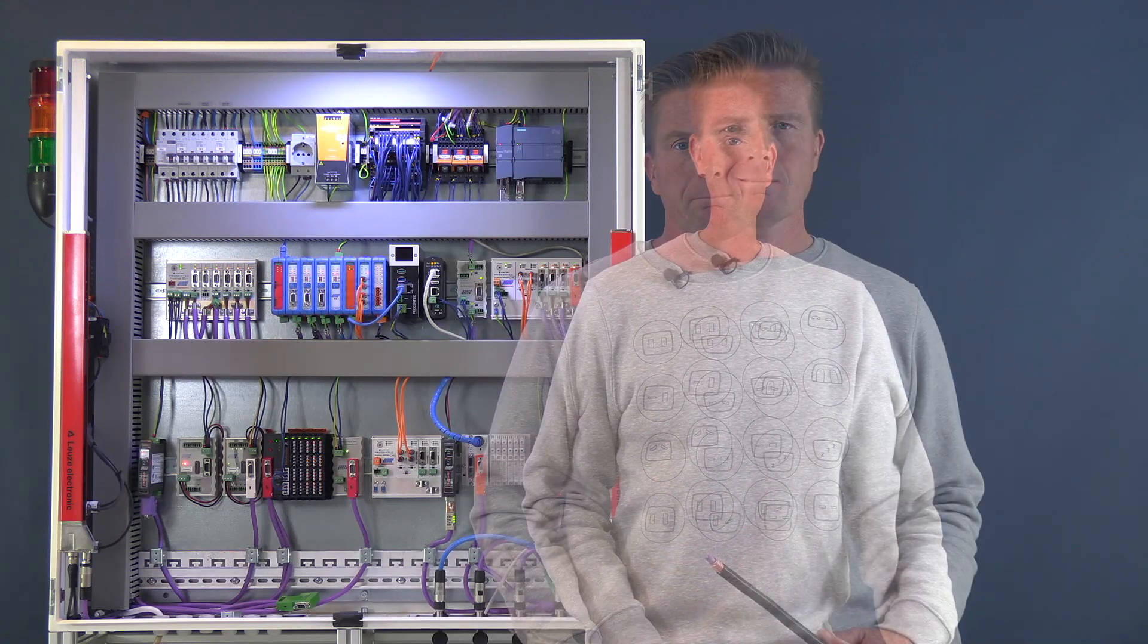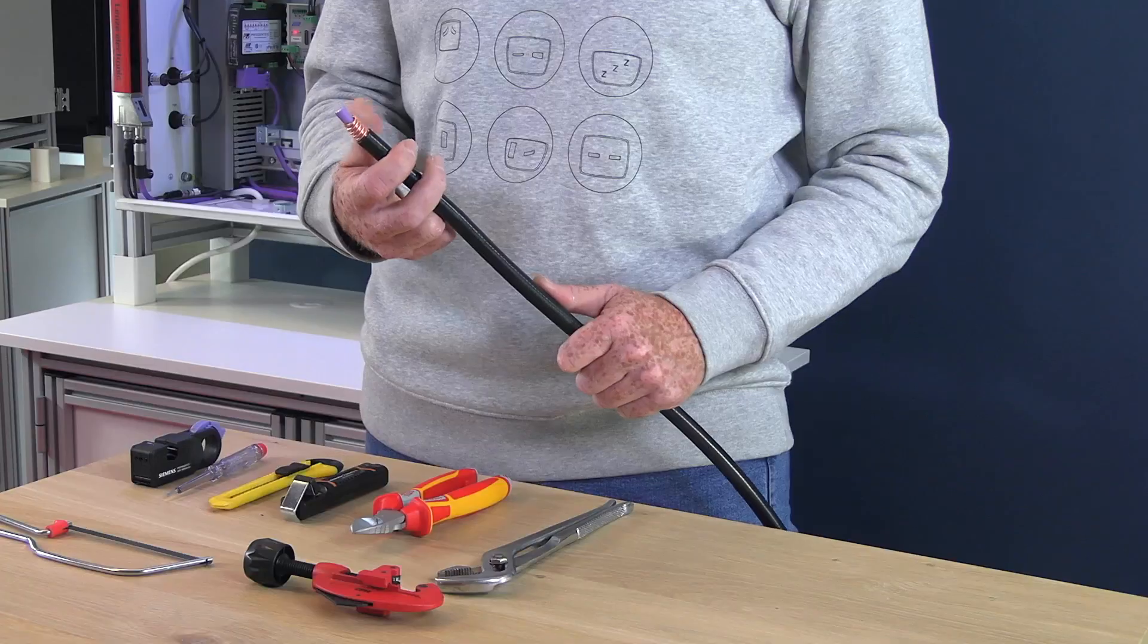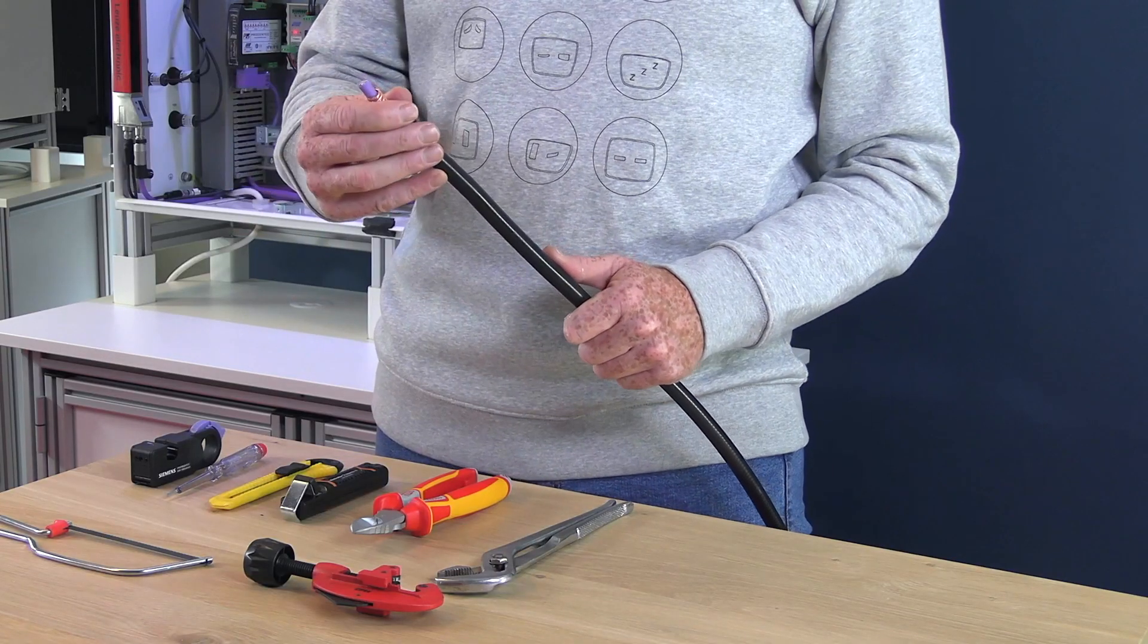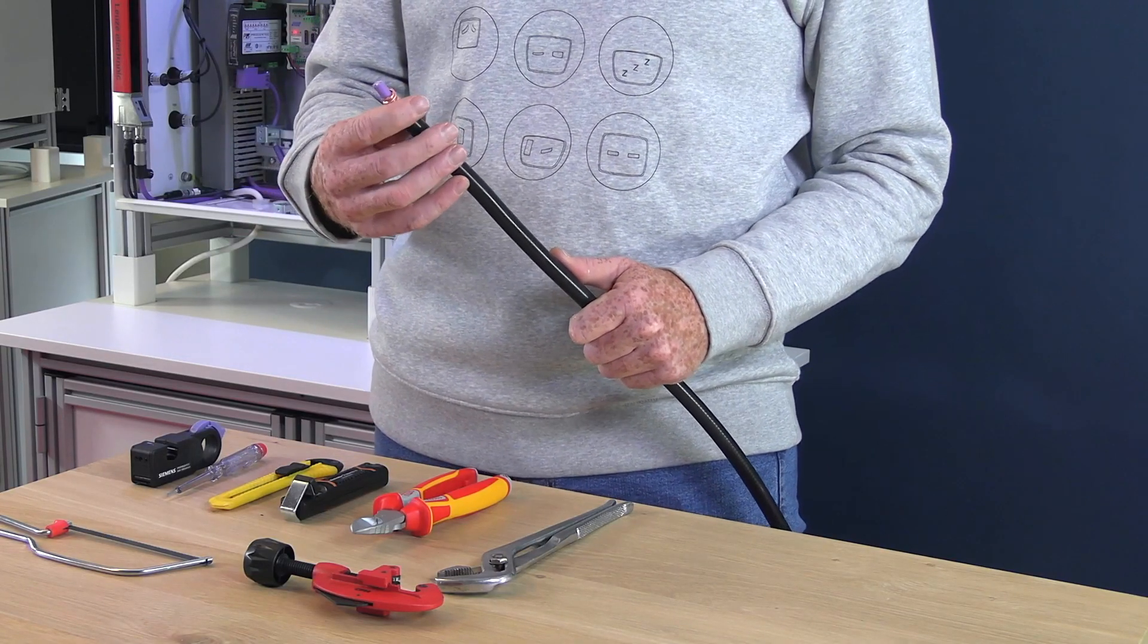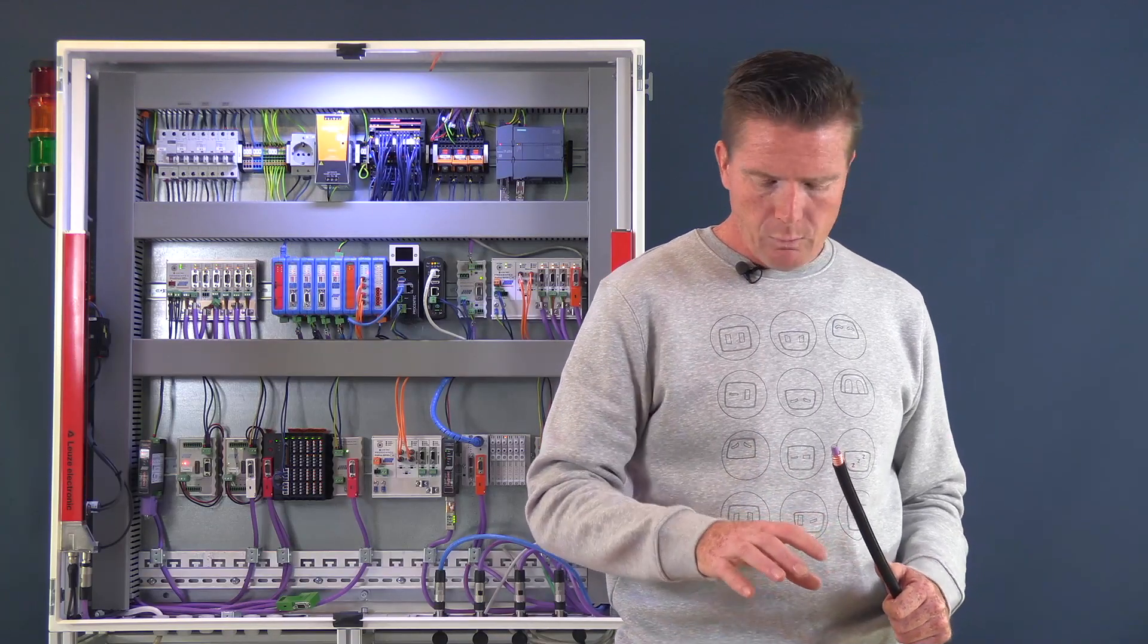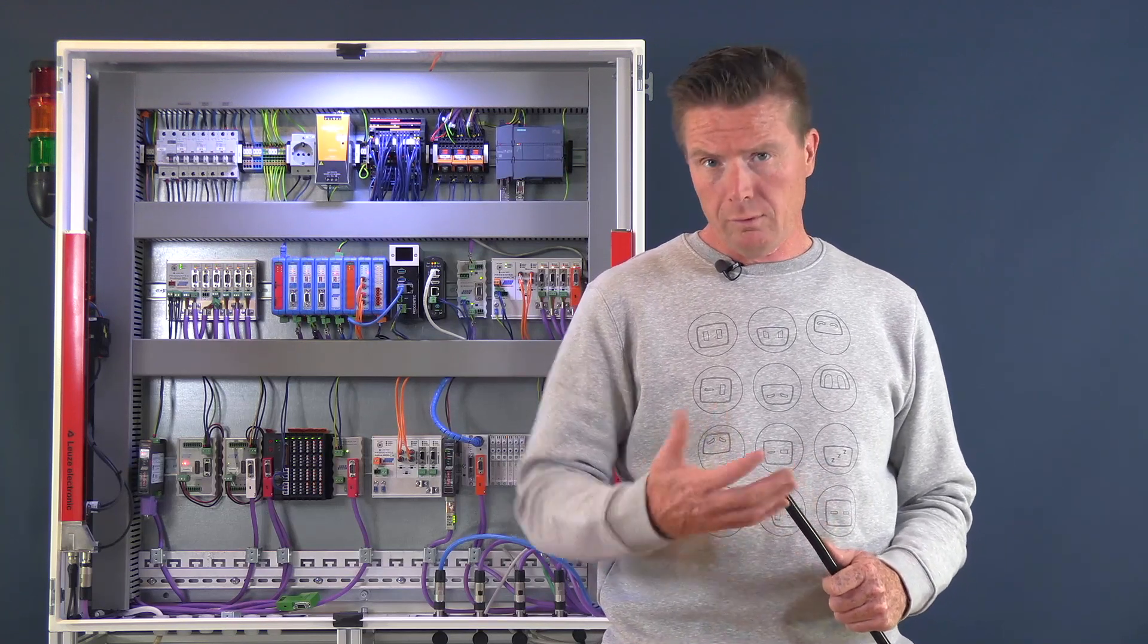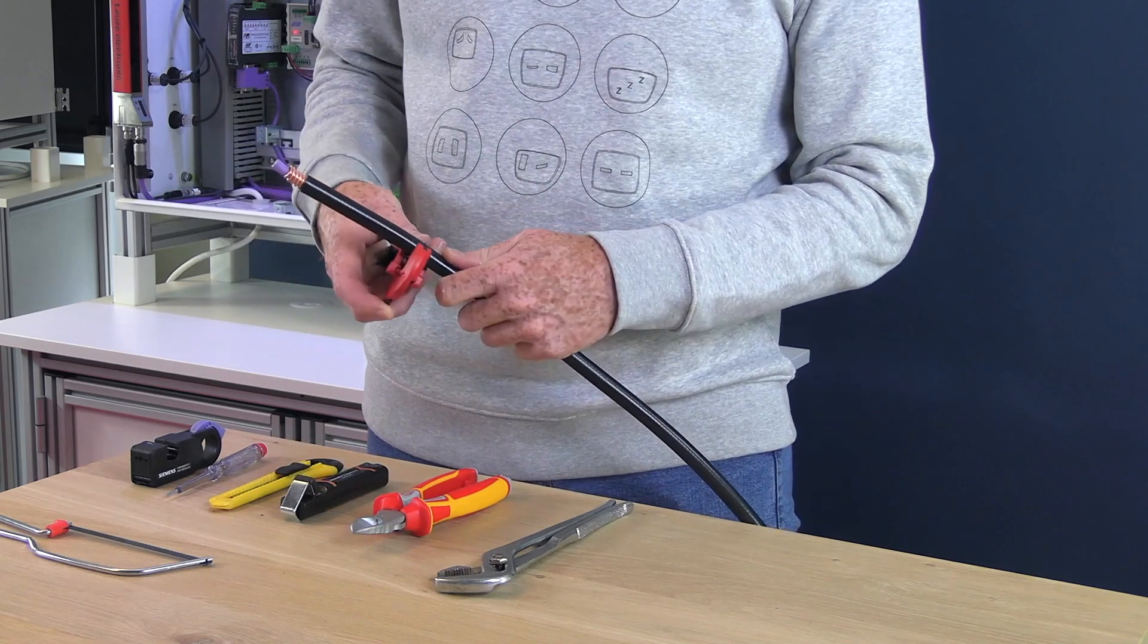So let's start. Okay, over here I've got my EMC Plus cable. There is an extra copper tube in this cable for extra protection against EMC. We need to remove this extra copper tube to be able to connect our Profibus cable.